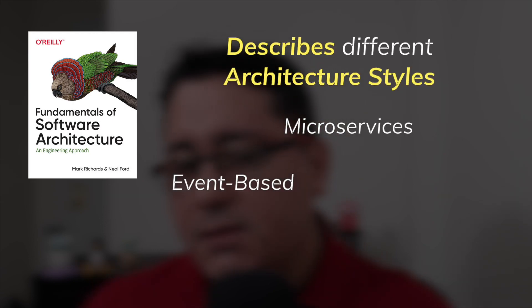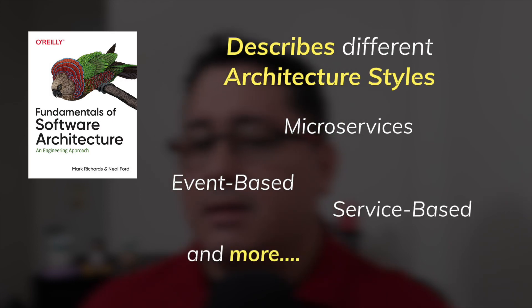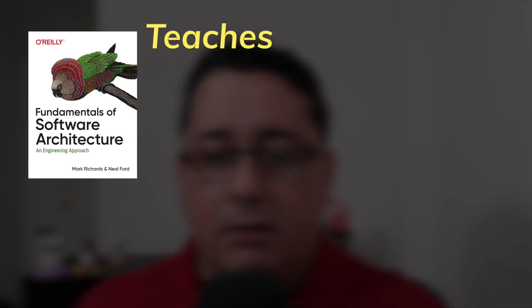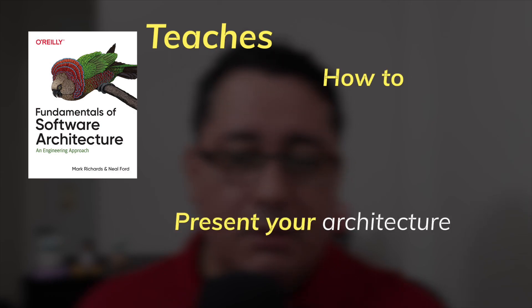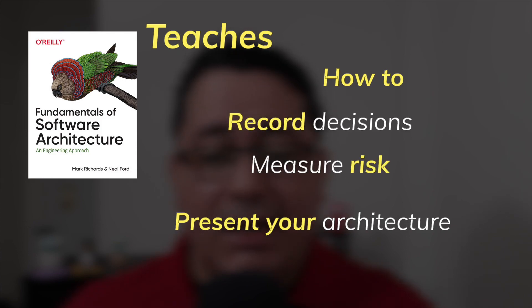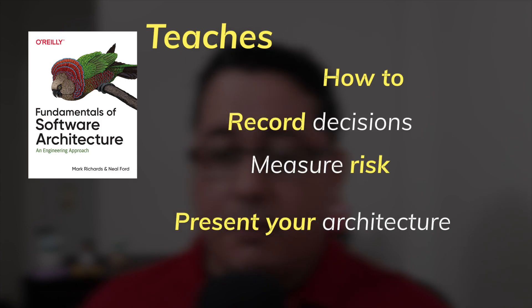It describes multiple different architecture styles such as microservices, event-based, service-based, and more. I like this book as well because it covers soft skills such as leadership — key skills required when working as an architect. It also teaches you how to present your architecture, which will depend on the audience, how to record decisions made, and how to measure risk. In conclusion, if you want to become a software architect, you must read this book first.